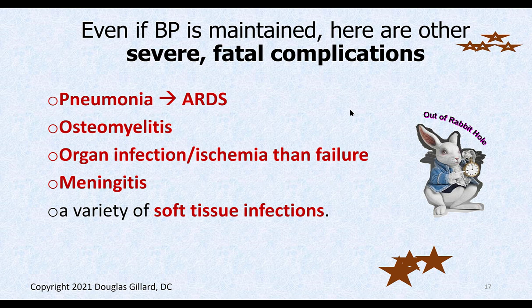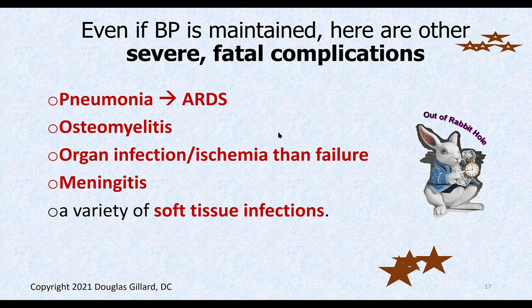About 700,000 cases annually — it's the 10th leading cause of death in the United States and the leading cause of death in critically ill hospital patients. About 210,000 die each year in the hospital from septicemia. Mortality rate is about 30%; if you go into septic shock it's over 60–70%. Even if blood pressure is resuscitated, people commonly develop pneumonia, osteomyelitis, liver and kidney involvement, meningitis, and encephalitis. Treatment is IV antibiotics and fluid resuscitation; dead pus-filled tissue may need surgical removal.